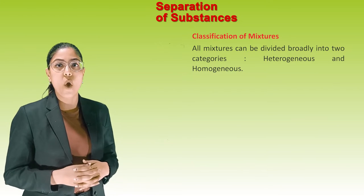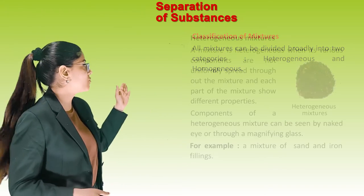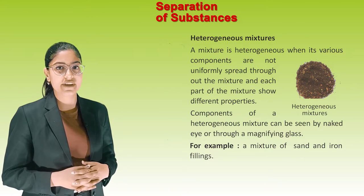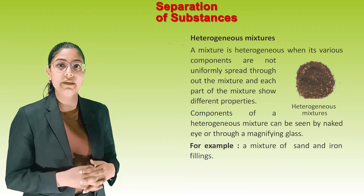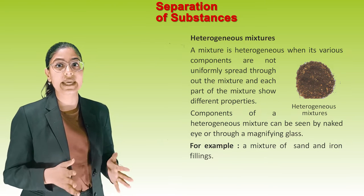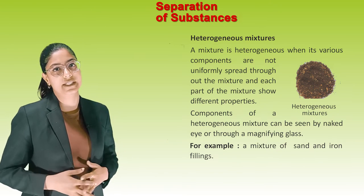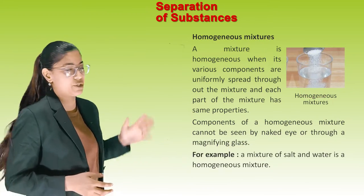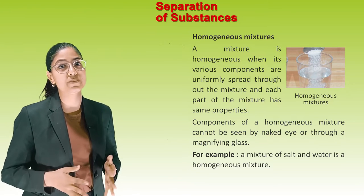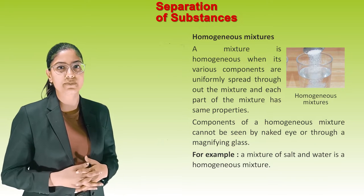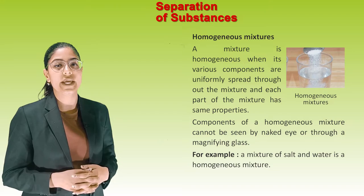Classification of Mixture: All mixtures can be divided broadly into two categories — heterogeneous and homogeneous. A mixture is heterogeneous when its various components are not uniformly spread throughout the mixture, and each part shows different properties. Components of a heterogeneous mixture can be seen by the naked eye or through a magnifying glass. For example, a mixture of sand and iron filings. A mixture is homogeneous when its various components are uniformly spread throughout and each part has the same properties. Components of a homogeneous mixture cannot be seen by the naked eye or through a magnifying glass. For example, a mixture of salt and water is a homogeneous mixture.